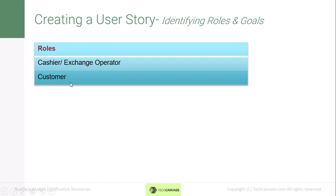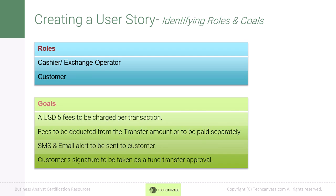After identifying the roles, let's note down what we are trying to achieve. The goals are: a transaction fee of USD 5 charged per transaction; the fee to be deducted from the transfer amount or paid separately; an SMS and email alert to be sent to the customer; and customer signature to be taken as fund transfer approval. Now we have the roles and we have the goals — let's try to map these two together.